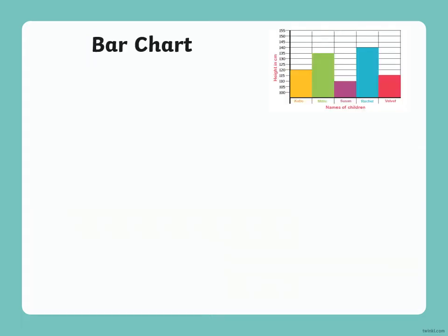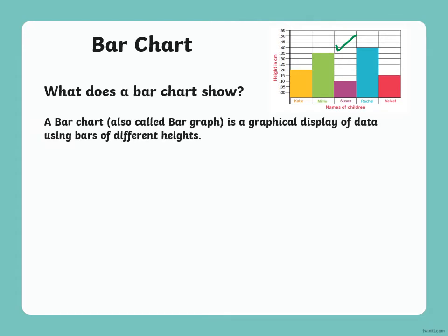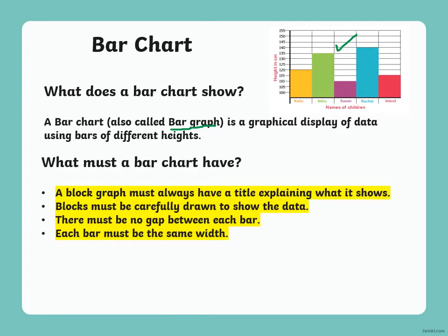A bar chart uses bars to show a picture of the data collected. A bar chart, also called a bar graph, is the graphical display of data using bars of different heights. A bar chart must have a title explaining what it shows. Blocks must be carefully drawn to show the data. There must be no gap between each bar, and each bar must be the same width.